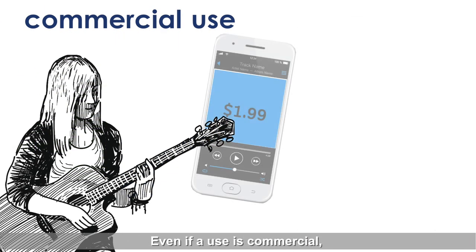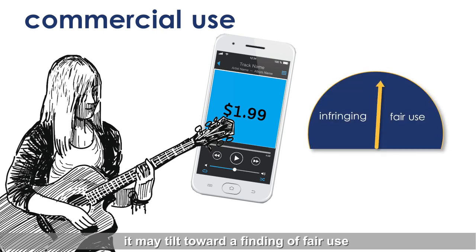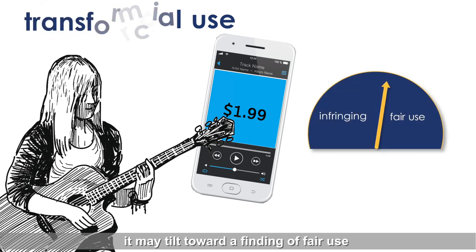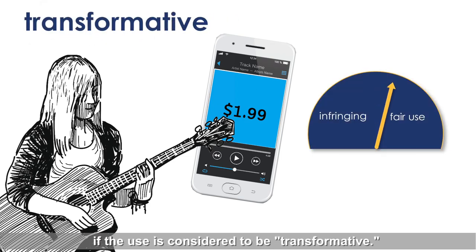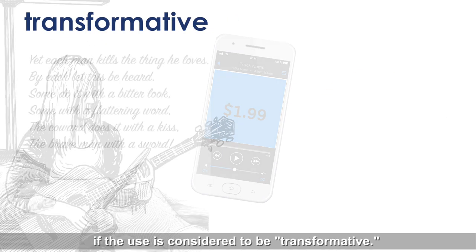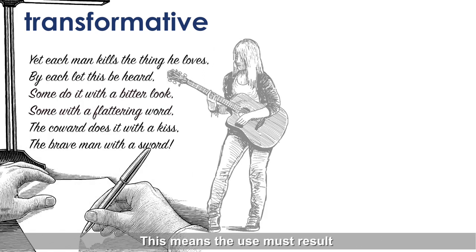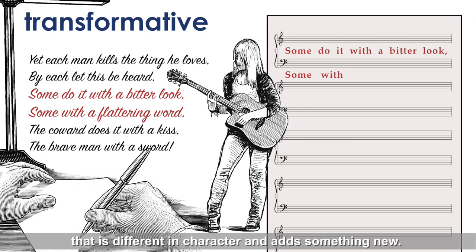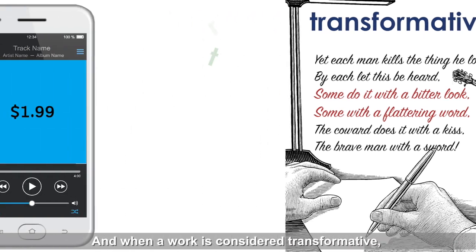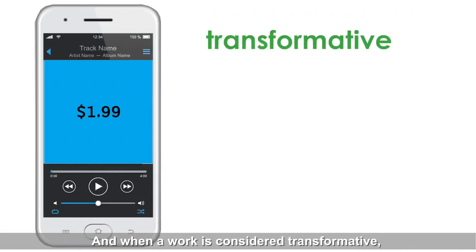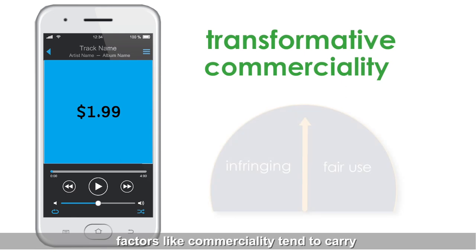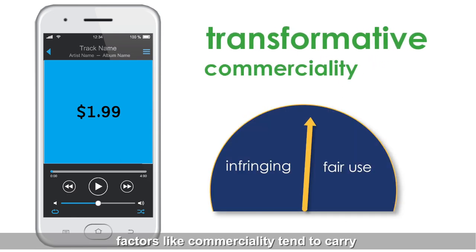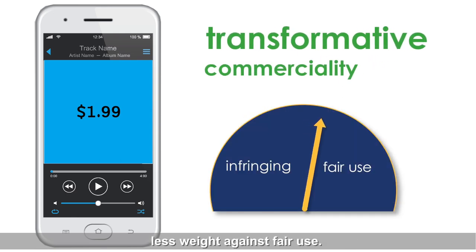Even if a use is commercial, it may tilt toward a finding of fair use if the use is considered to be transformative. This means the use must result in the creation of a new work that is different in character and adds something new. And when a work is considered transformative, factors like commerciality tend to carry less weight against fair use.